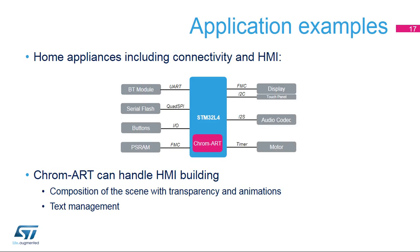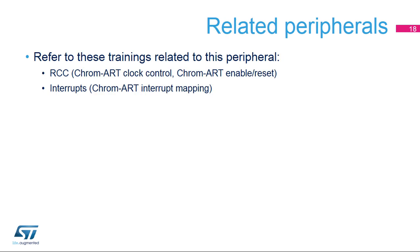The Chrom-ART Accelerator is widely used in any graphical application to compute the framebuffer without any CPU load and with a very efficient throughput. It can compose the whole scene with transparency and facilitate the management of animations. Text rendering is also accelerated, making it easy and efficient to manage anti-aliased fonts. You can refer to the trainings related to the RCC and interrupts for additional information.